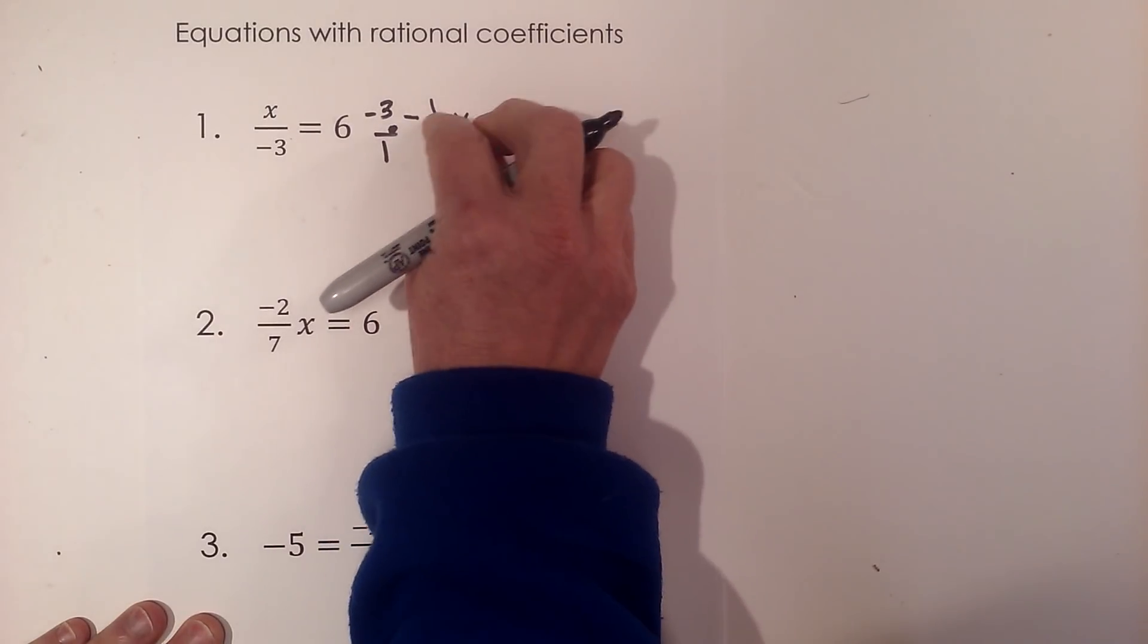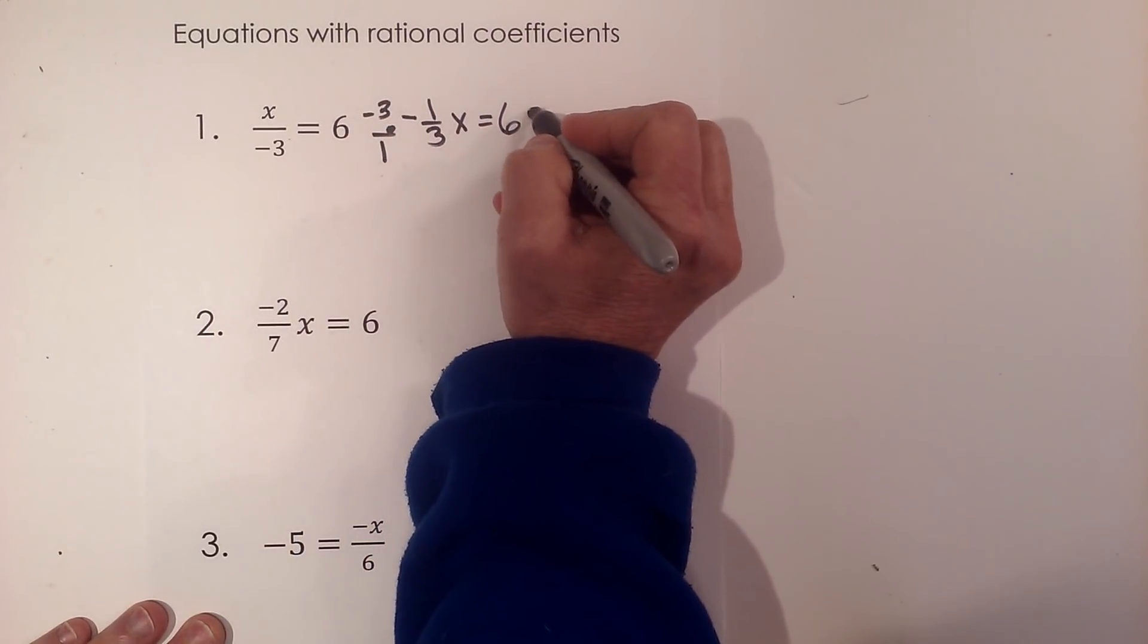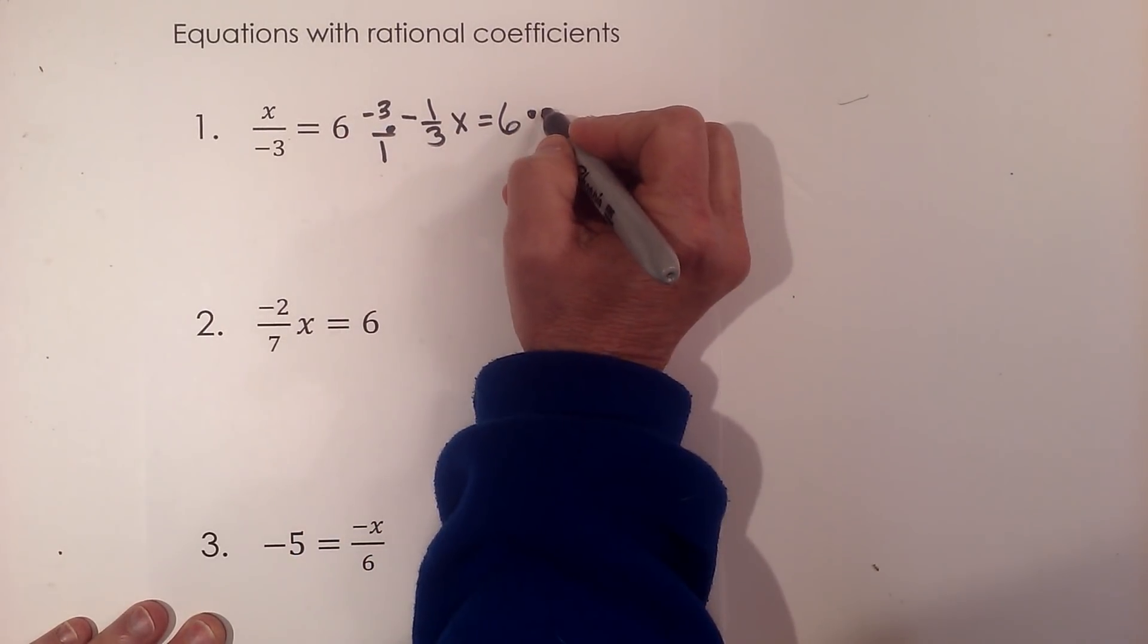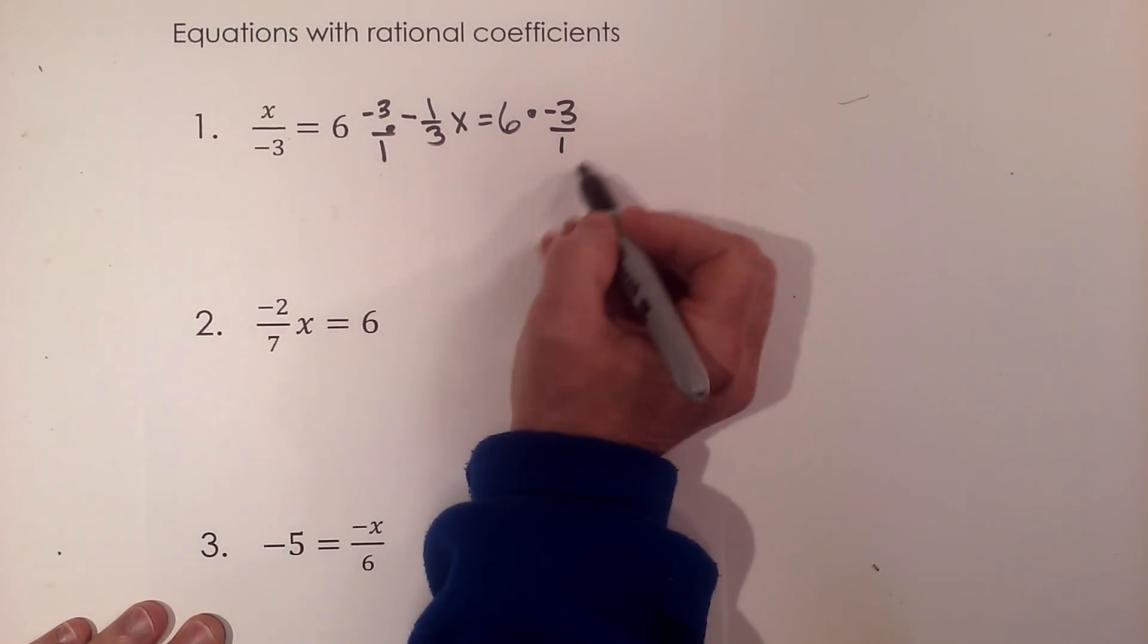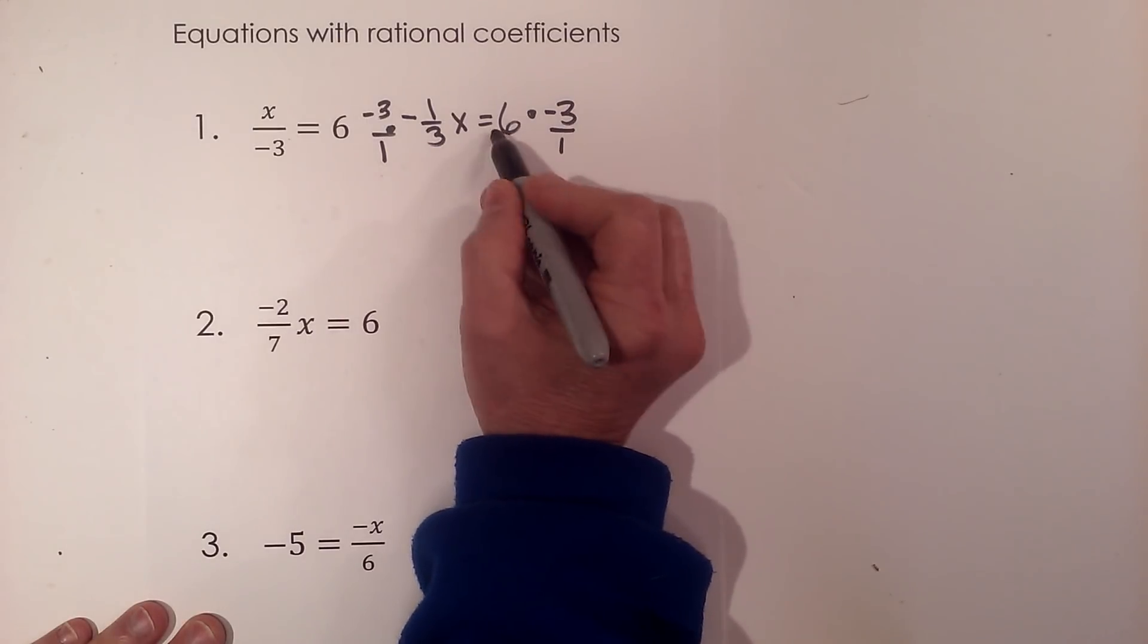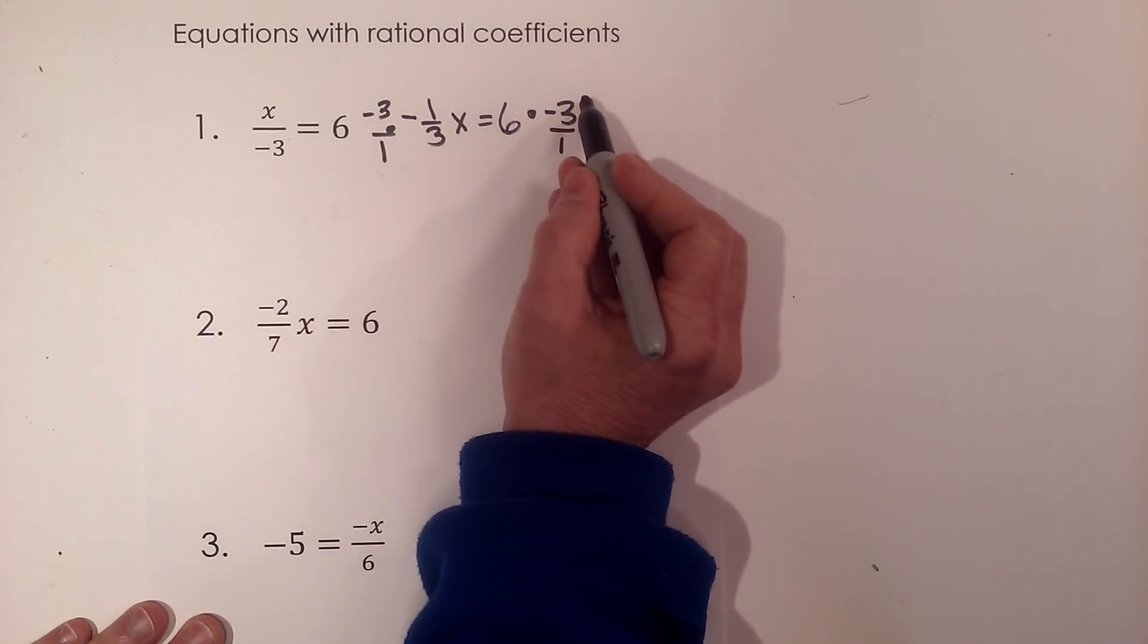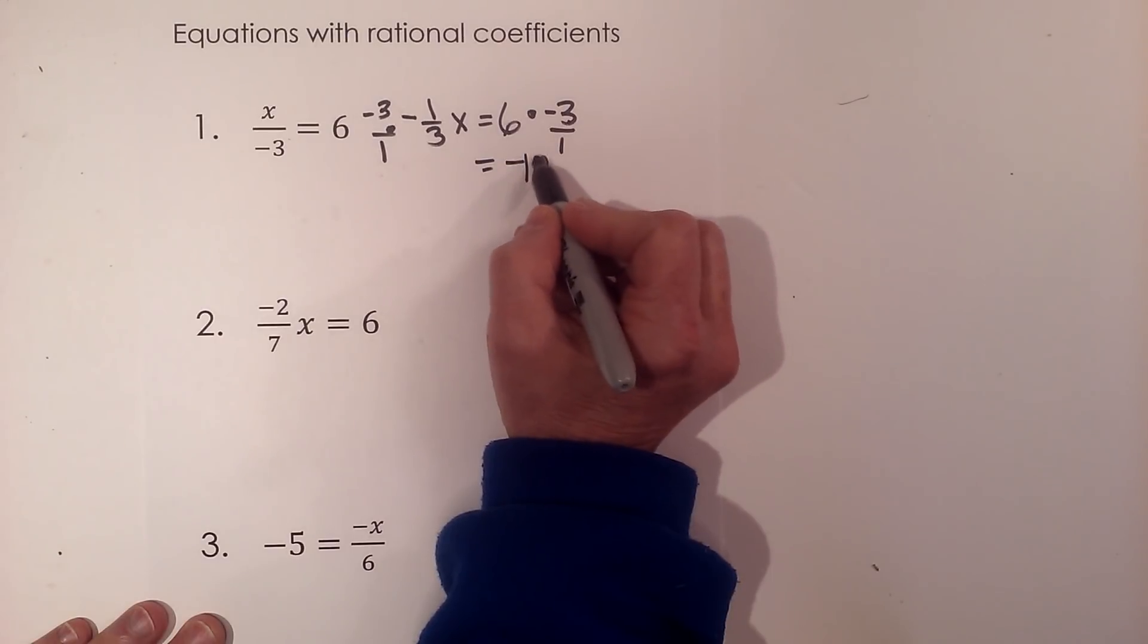I'm going to multiply by the reciprocal of negative one-third, which is negative three over one. If I do that to one side, I have to multiply the other side by negative three over one. I don't really need to write negative three over one because this is also just a whole number, so I can just multiply six times negative three to get negative eighteen.